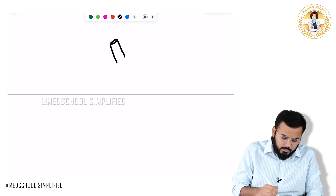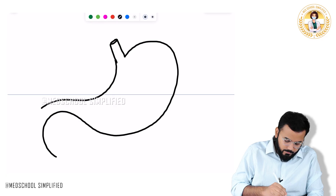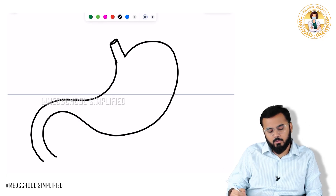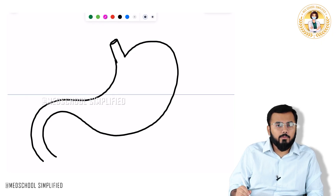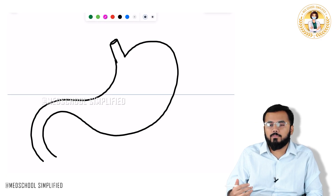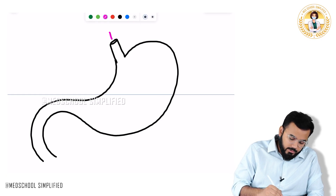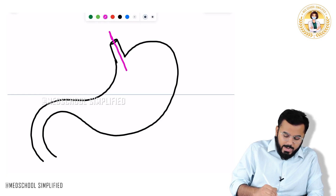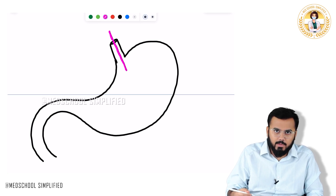Let me draw a picture. Here is the stomach. On the stomach you have got two types of branches: one is called the anterior vagal trunk, and on the back you have the posterior vagal trunk. This is an anterior picture, so what I am drawing right now is the anterior vagal trunk.